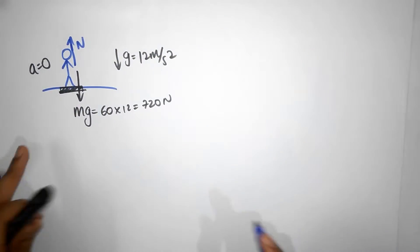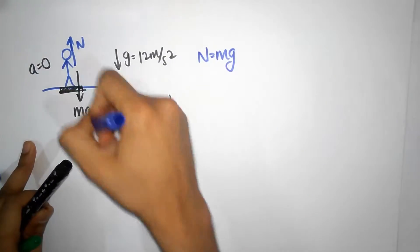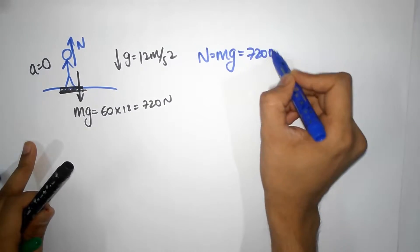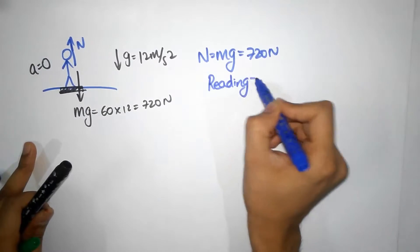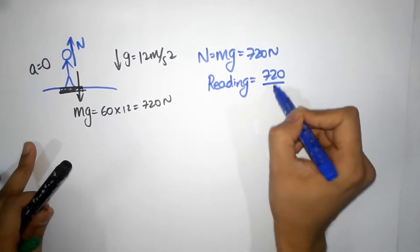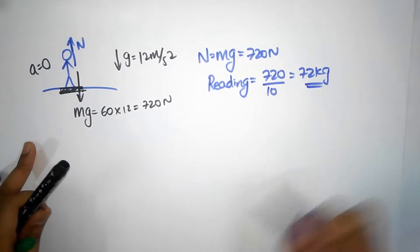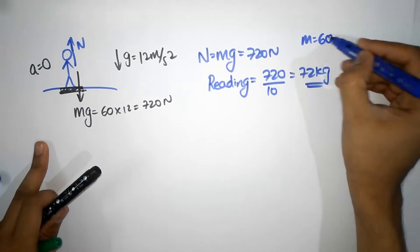Now what's the normal force? Well, normal force is going to be mg because there are no accelerations, so that's going to be just 720 Newtons. And so the reading is going to be 720 divided by 10. Again, it's 72 kilograms. But you know your mass is 60 kilograms.